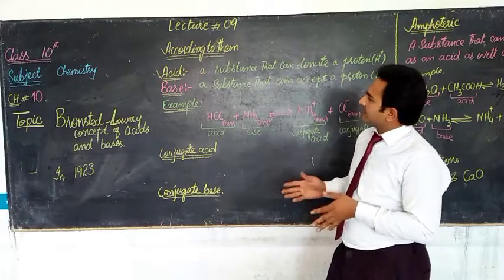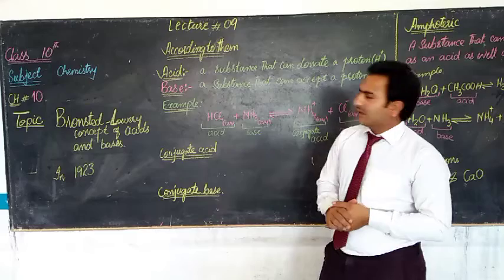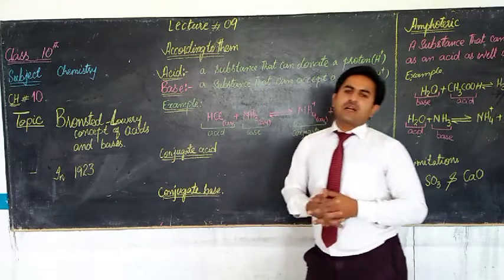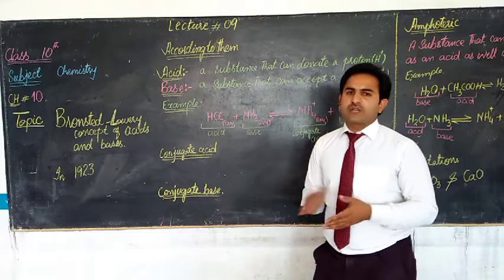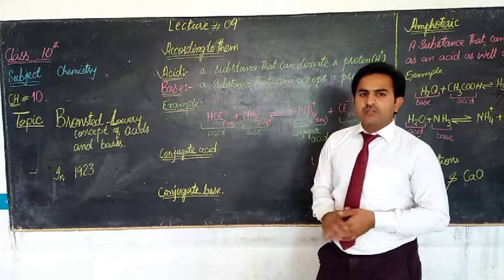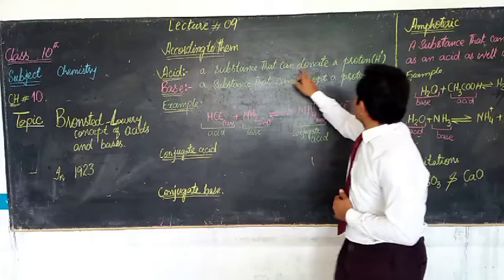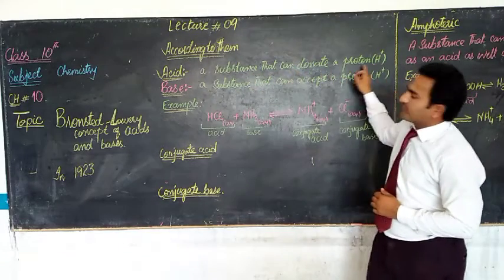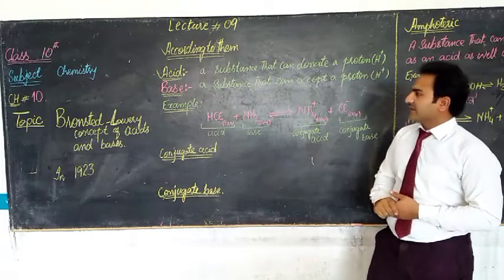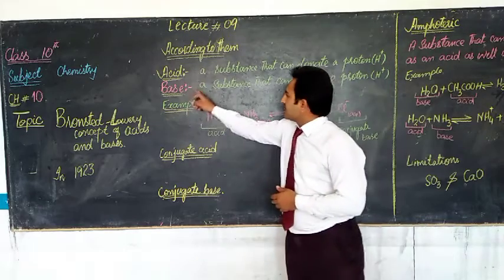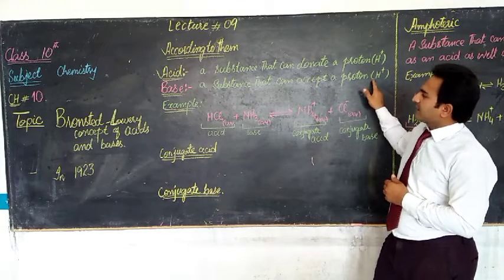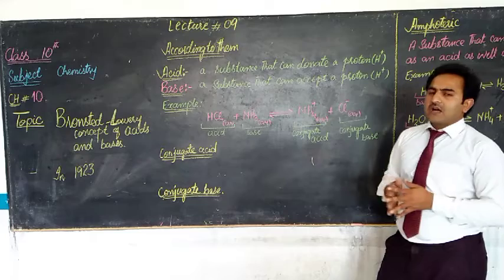According to them, acid and base - first of all, acid. Acid is a substance that donates a proton. In 1923, we have base. Base is a substance that accepts a proton. That is our base. Now let's take a look at these two examples.